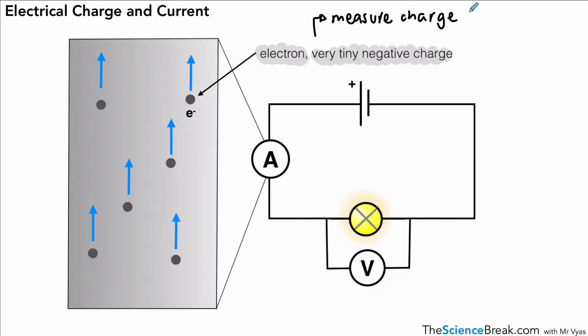So we measure the charge on lots of them. Measure the charge on lots of electrons. And in that way we have a charge that's big enough to be able to be detectable by our ammeter.